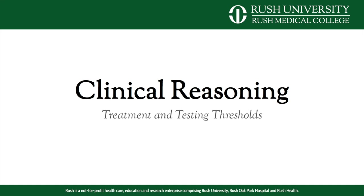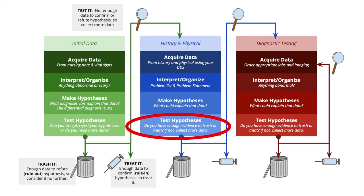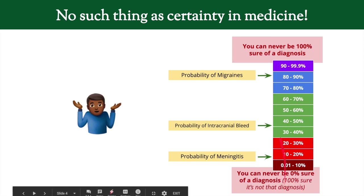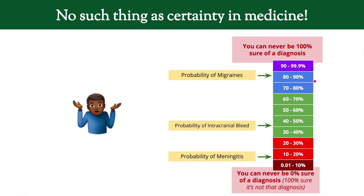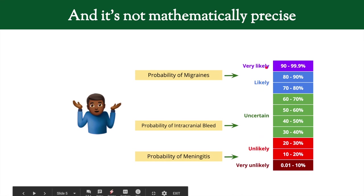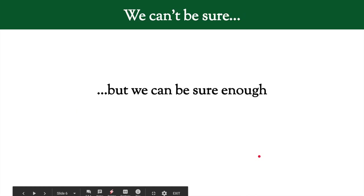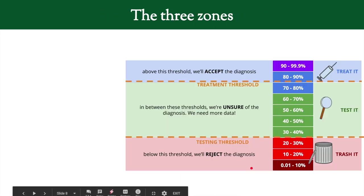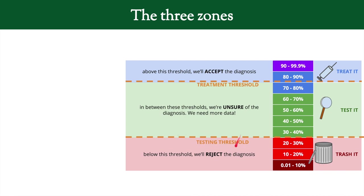In this video we're going to talk about treating and testing thresholds — how you determine when you want to treat someone versus when you want to test someone. This falls within our testing hypotheses area of our framework. There's no such thing as certainty in medicine, so we divide the probability space into three zones: treat it, test it, and trash it. In the trash it zone we reject the diagnosis; above the treatment threshold we accept it and treat.